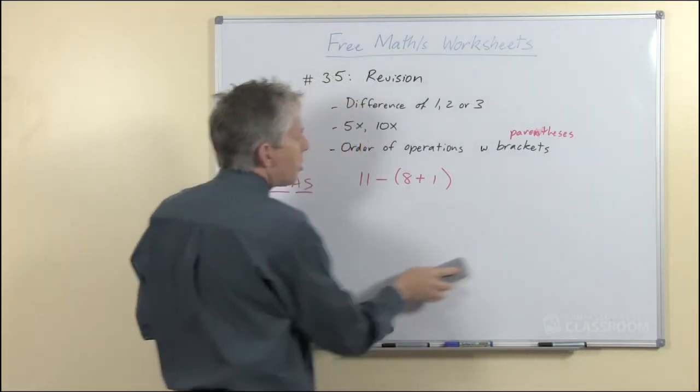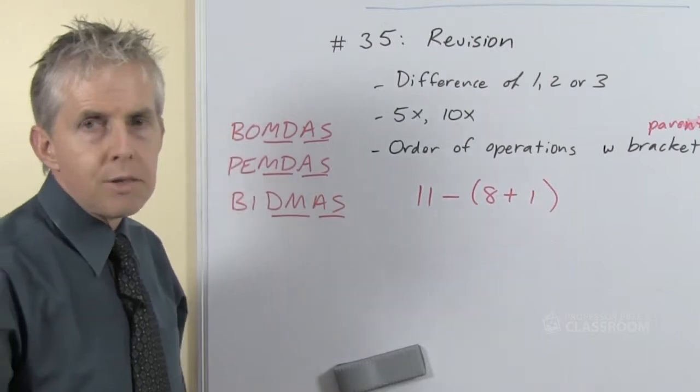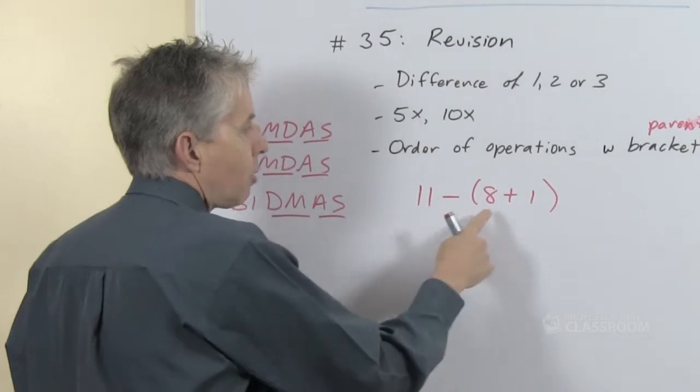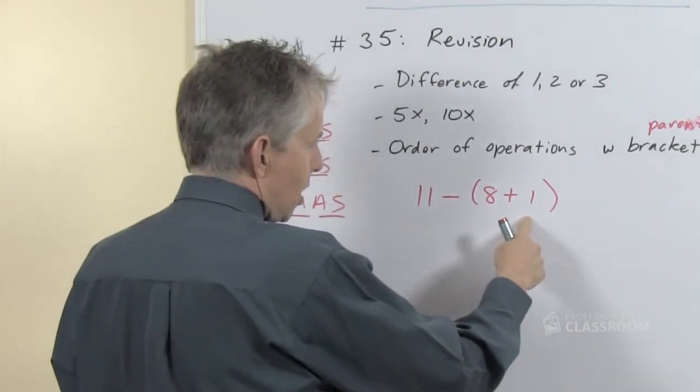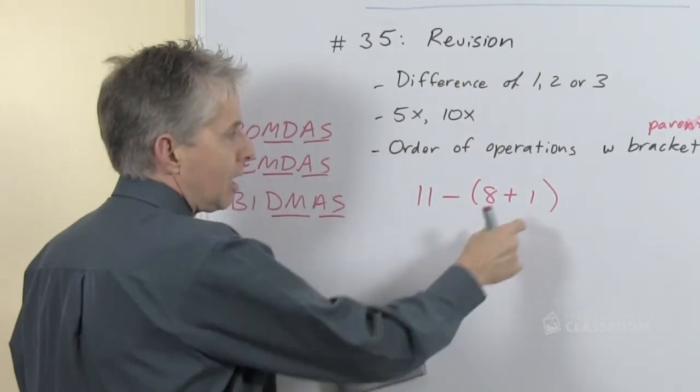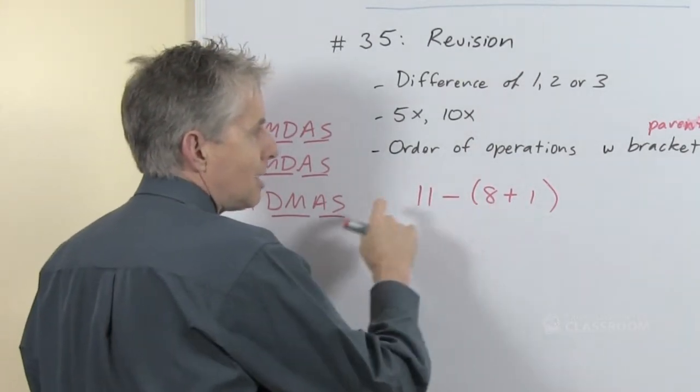In this example here you can see that the parentheses make a difference. If we didn't have them the answer would be different. So 11 - 8 is 3 + 1 is 4, but if we add the 8 and the 1 first getting 9, 11 - 9 is 2. So it does make a difference.